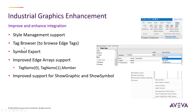Also in this, we've added a tag browser that will allow you to browse from the industrial graphics environment to Edge tags, allowing you to get at not only the tag, but arrays and classes as well. There's also the ability to export your industrial graphics symbols. In 2020, we added importing, and now in 2020 R2, we have the exporting.